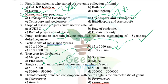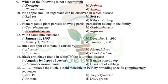Dichotomously branched conidiophore with acute angle is the characteristic feature of Peronospora. In downy mildews, important genera include Sclerospora, Peronospora, Plasmopara, and Bremia. Dichotomously branched conidiophores are produced by Peronospora.